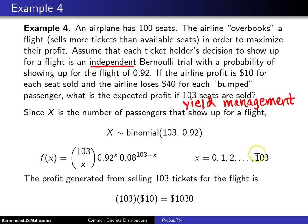Now the most interesting cases here turn out to be x equals 101, 102, and 103 because those are the cases in which we have to bump somebody off of the flight and we incur this forty dollar penalty. The profit that is generated from selling 103 tickets for the flight is 103 times ten dollars or one thousand and thirty dollars. So we start with that as a base and then we look at the probabilities of having to bump customers.